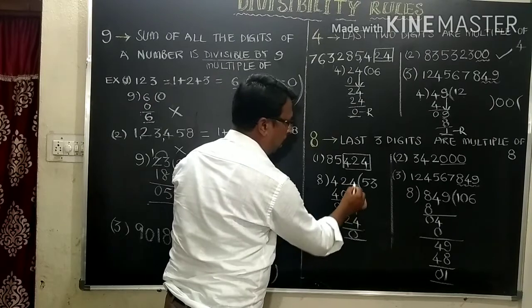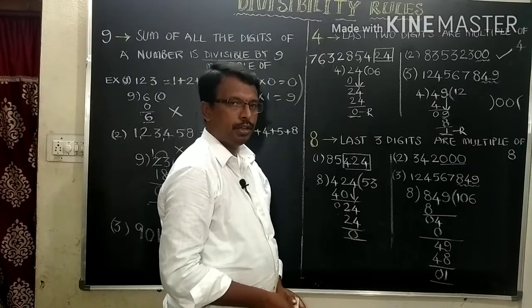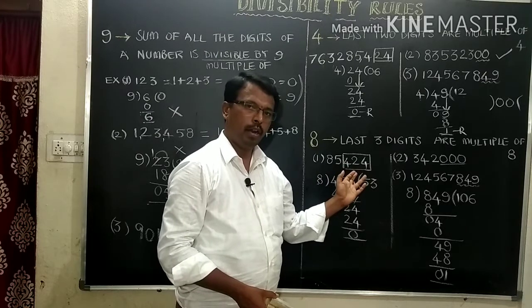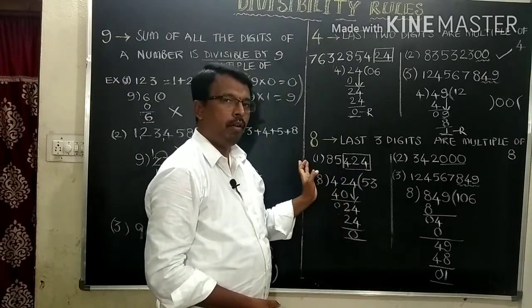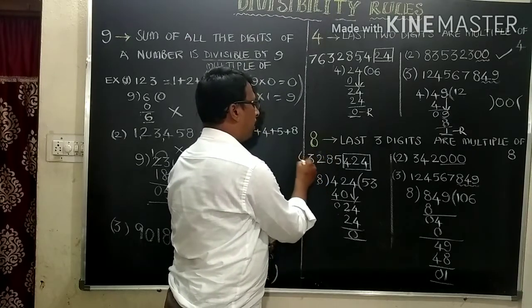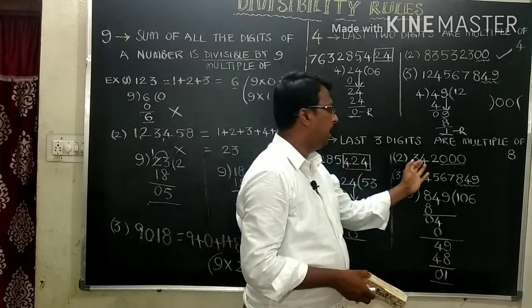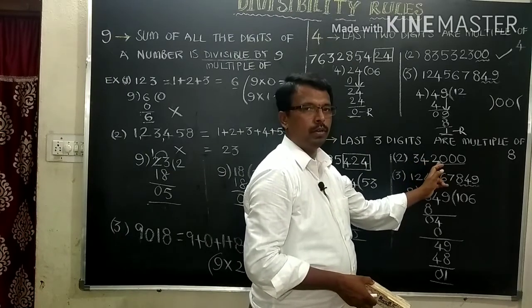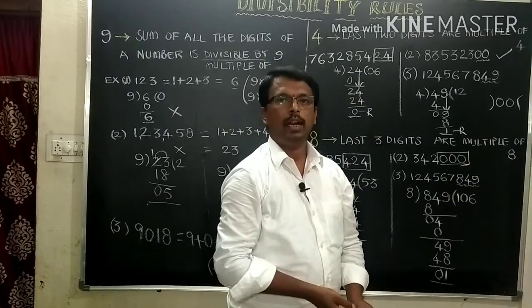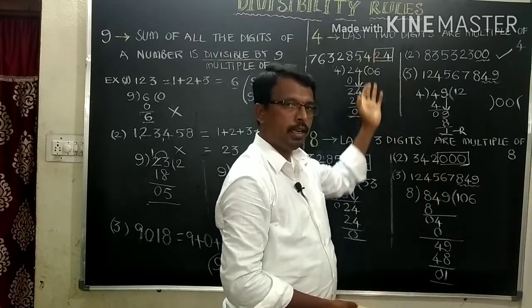When we divide 424 by 8: 8 times 3 is 24, the remainder is 0. So 85,424 can be divided by 8. Also, 342,000 — the last three numbers are zeros, so we can say it can also be divided by 8. For 2 zeros we use 2 digits; for 3 zeros we use 3 digits.